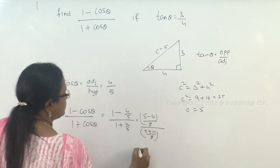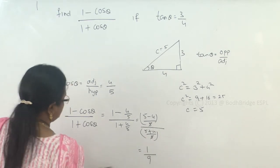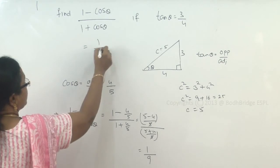5 and 5 will get cancelled. What we have is 5 minus 4 is 1 divided by 5 plus 4 is 9. So, therefore the answer is 1 by 9.